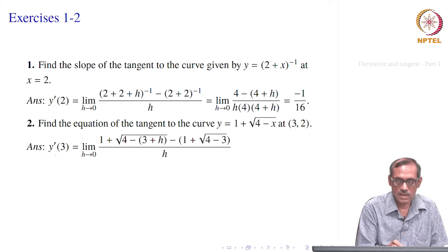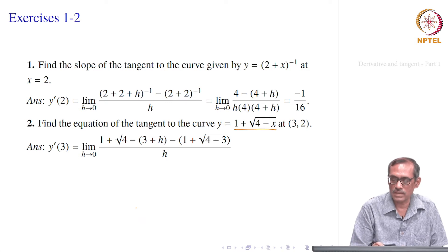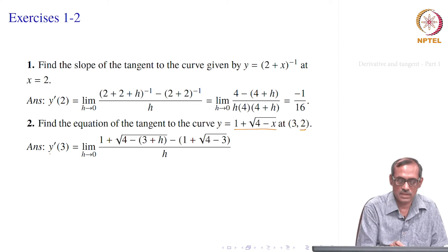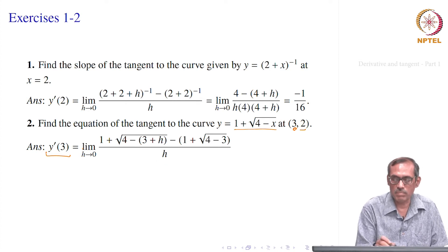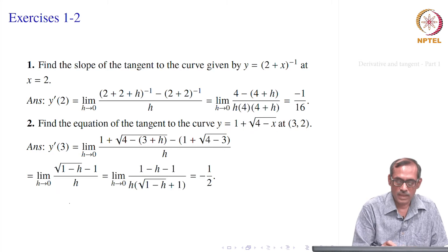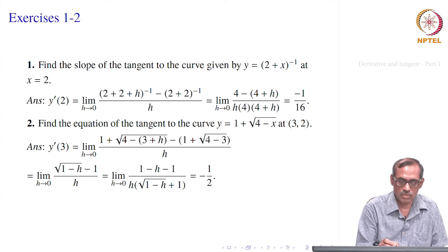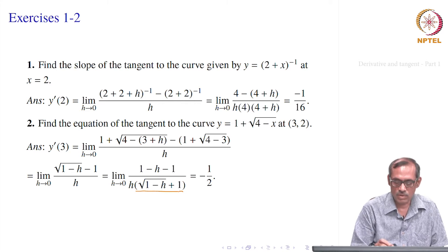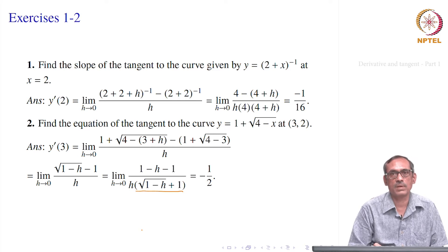We will compute the derivative. Consider y equal to 1 plus square root of (4 minus x) and compute its derivative at x equal to 3. So y prime of 3 is the limit as h goes to 0 of f of (3 plus h), which is 1 plus square root of (4 minus (3 plus h)), minus 1 plus square root of (4 minus 3), divided by h. The second term is 2; the 1 cancels. We need to handle the square root, which becomes square root of (1 minus h) minus 1, divided by h. To cancel the h, multiply by square root of (1 minus h) plus 1 in numerator and denominator. In the numerator that gives (1 minus h) minus 1 squared, which is (1 minus h minus 1) divided by h times (square root of (1 minus h) plus 1).